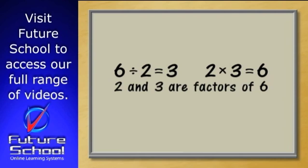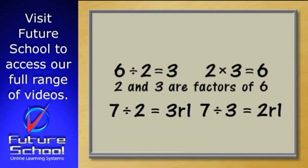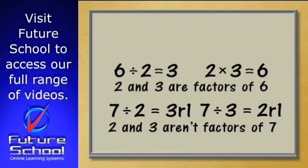But two isn't a factor of seven, and neither is three, because if we divide seven by two or three, we get one left over. A factor doesn't leave any remainders.